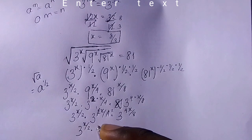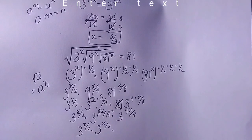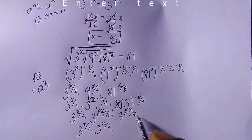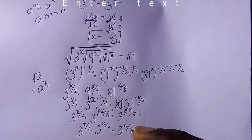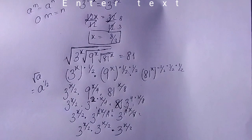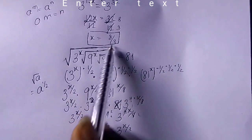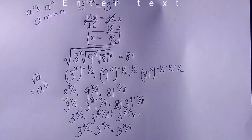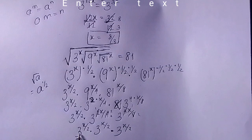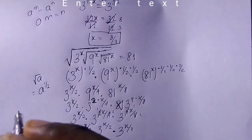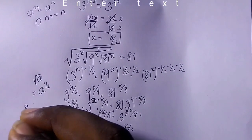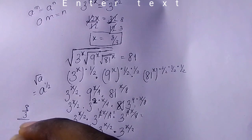Now substituting x = 8/3. We compute x/2: that is (8/3) ÷ 2 = 8/3 × 1/2 = 4/3. So all three terms become 3 raised to the power of 4/3. This means we have 3 raised to the power of 4/3, times 3 raised to the power of 4/3, times 3 raised to the power of 4/3.